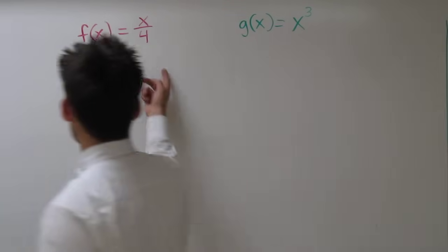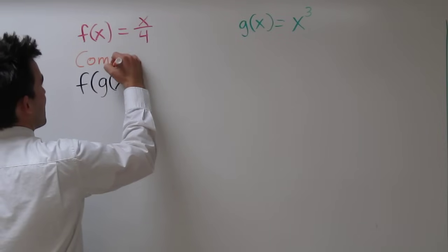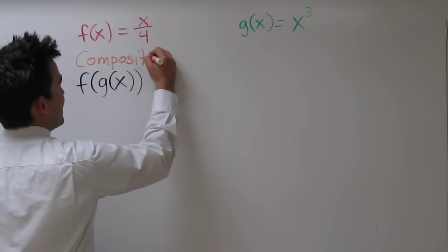Now, here we have something that's kind of weird: f of g of x. This is called the composition of the function f with the function g. So let's call it a composition function.